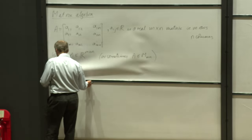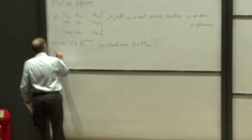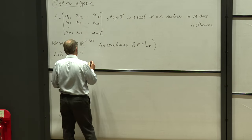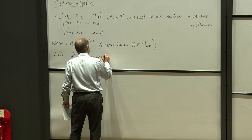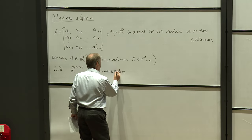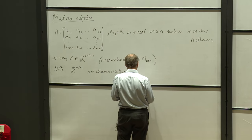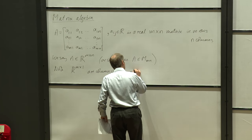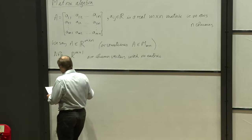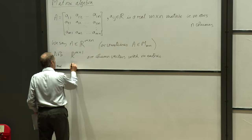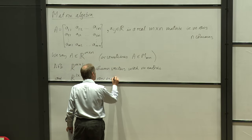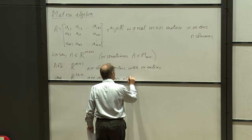Note that R^{M×1} are column vectors with M entries. And R^{1×N} are row vectors with N entries.